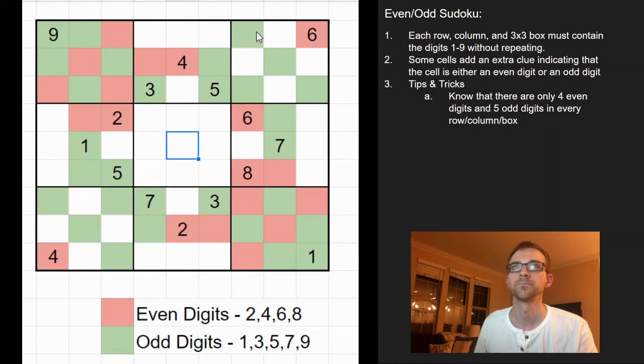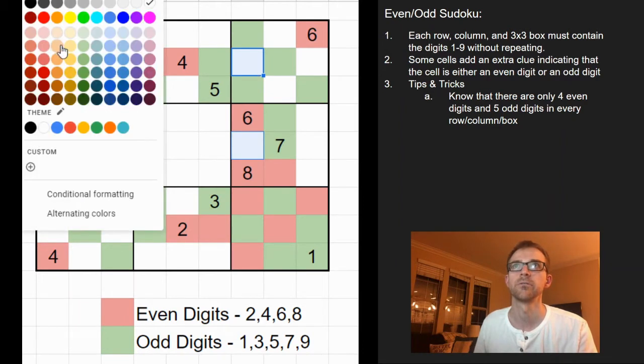And looking here at the 7th column, I can. Because again, they've given you all of the even digits. There's 4 red cells. So these 2 unknowns must be green.